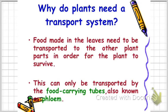Plants also need food, and leaves make food. The food has to be transported from the leaves to all parts of the plant. That is done with the food-carrying tubes. The function of the food-carrying tube is to transport food from the leaves to all parts of the plant.